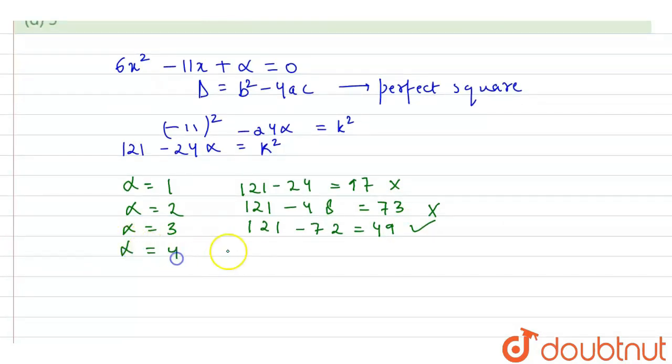Now alpha equals 4. If we put, we get 121 minus 96 which equals 25. So 25 is also a perfect square. So this value is accepted.